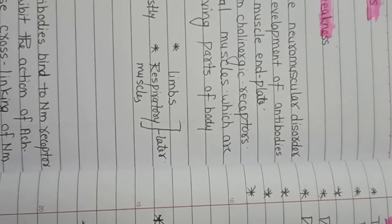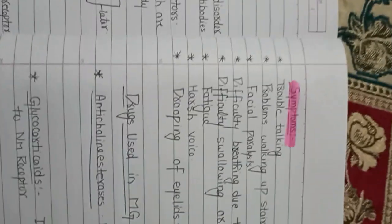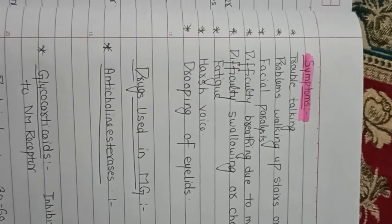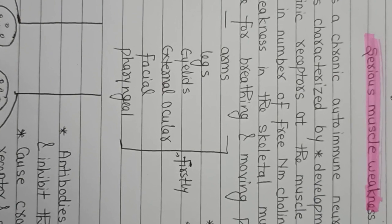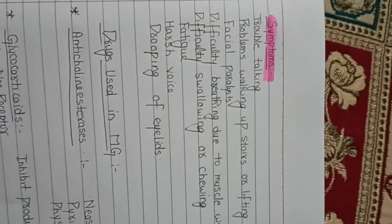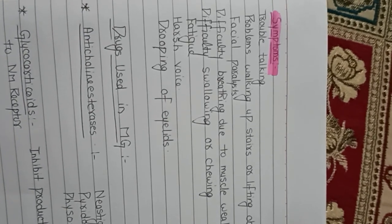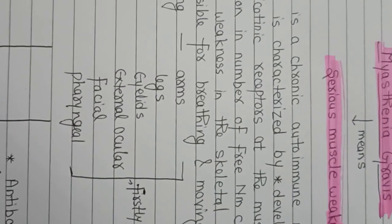Limbs and respiratory muscles are also affected. So our symptoms include: first, trouble talking — why? Because pharyngeal muscles are affected. The second problem is difficulty walking up stairs and lifting objects. Why? Because our arms and legs are affected.